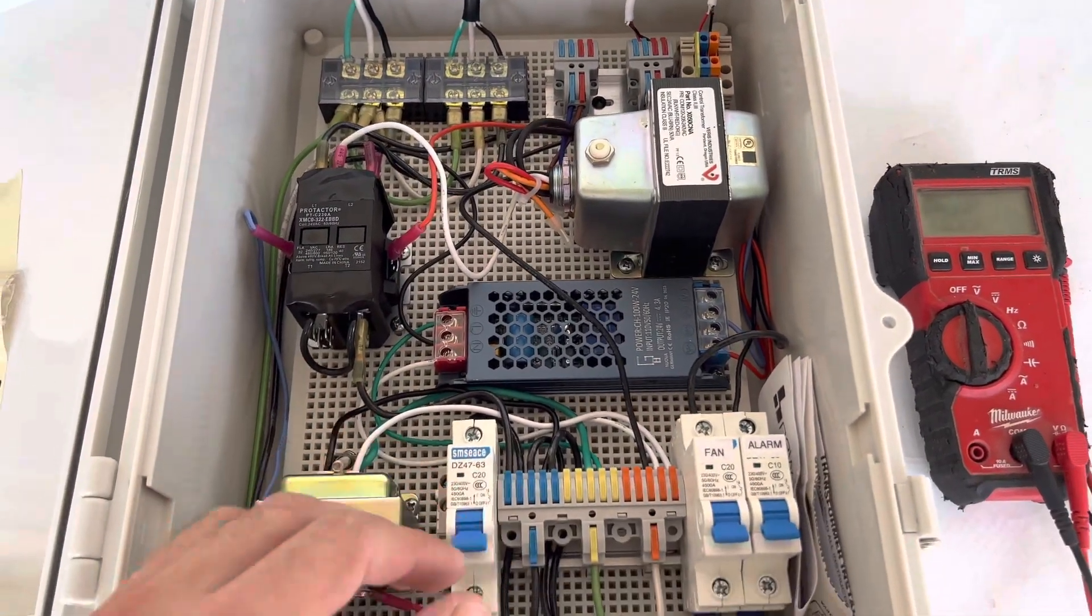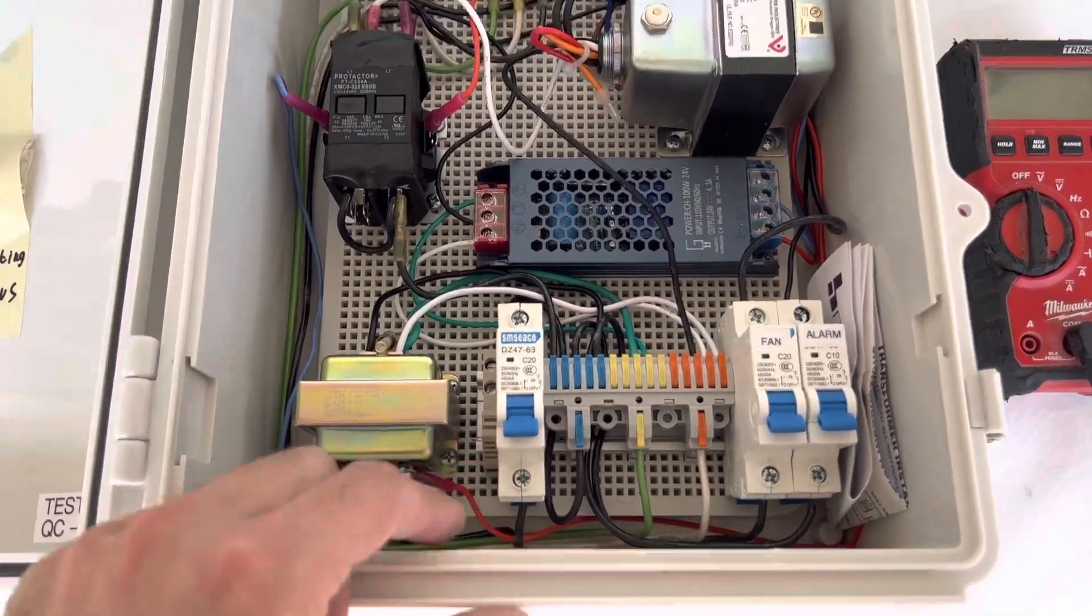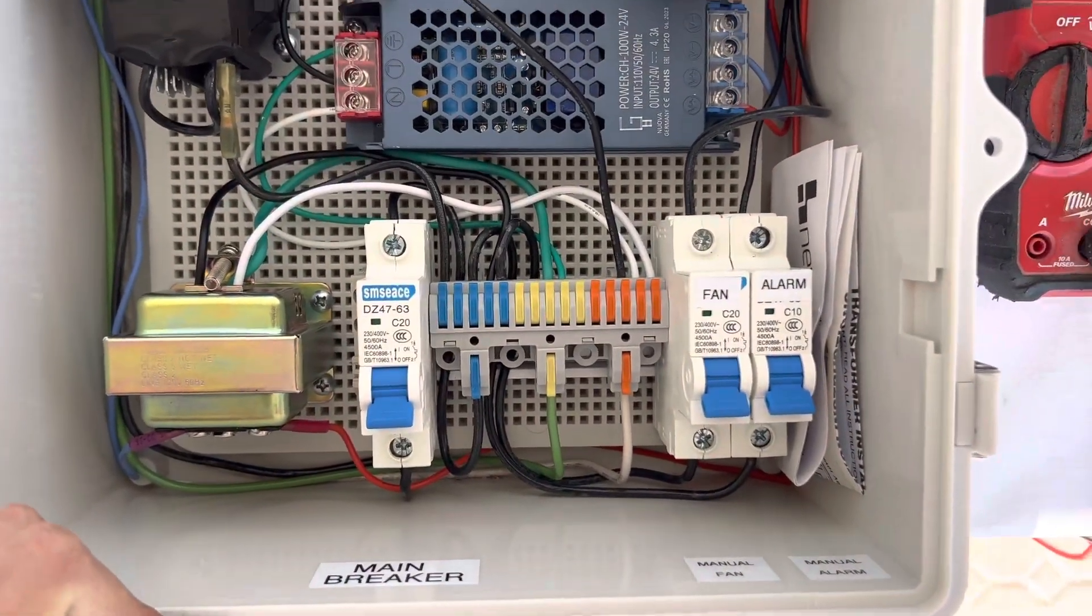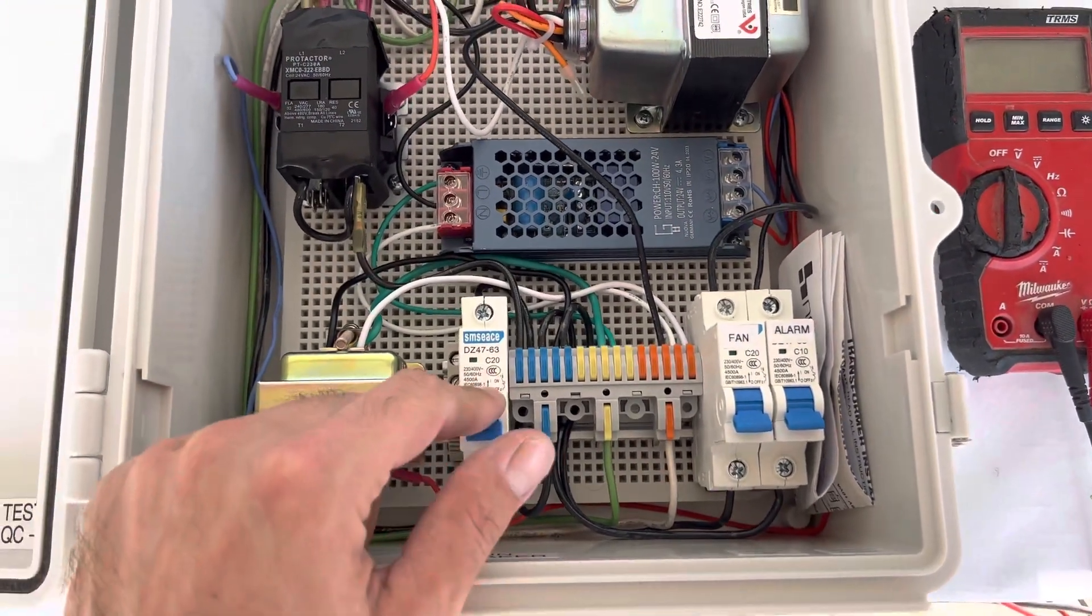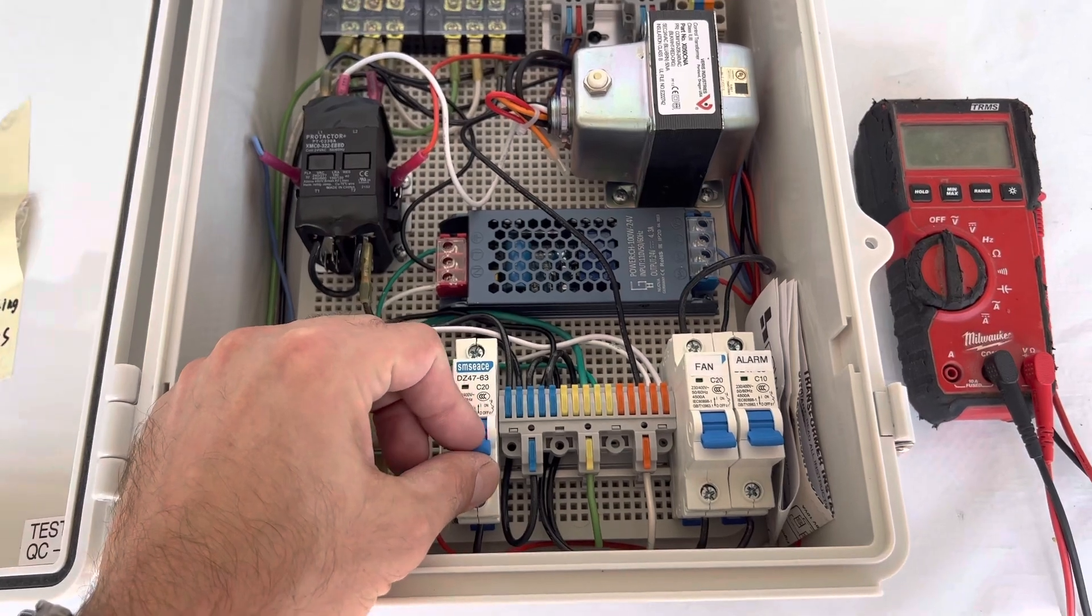Right here is the main breaker. It needs to be on in order for the system to operate. When this breaker is on, the system is just waiting for this trigger to get shorted, to get closed.